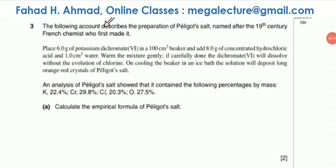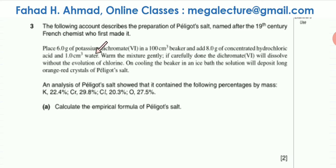The following question describes the preparation of Péligot's salt, named after the 19th century French chemist who first made it. Place 6 grams of potassium dichromate(VI) in a 100 cm³ beaker, add 8 grams of concentrated hydrochloric acid and 1 cm³ of water. Warm the mixture gently; if carefully done, the dichromate(VI) will dissolve without the evolution of chlorine. On cooling the beaker in ice, the solution will deposit long orange-red crystals of Péligot's salt.